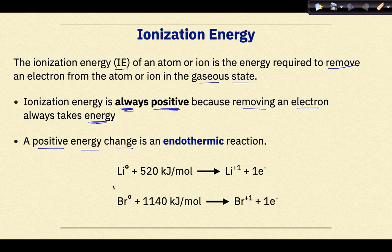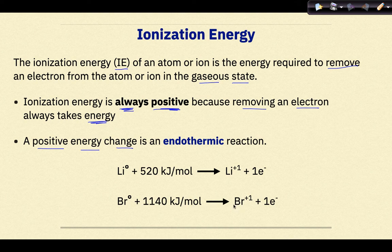For example, an atom of lithium requires 520 kilojoules per mole to produce lithium ions and one mole of electrons. A bromine atom, if we were to try to remove one of its valence electrons, has an ionization energy of 1140 kilojoules per mole to produce one mole of bromine ions and remove one electron per atom.